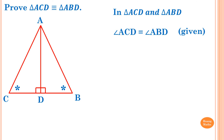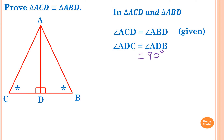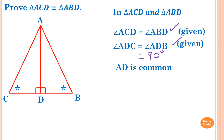The next fact: angle ADC is equal to angle ADB, both equal 90 degrees — reason: given, as stated on the diagram. The last fact: AD is the common arm between triangle ACD and triangle ABD — so AD is common. Now we have two corresponding angles equal and a corresponding common side.